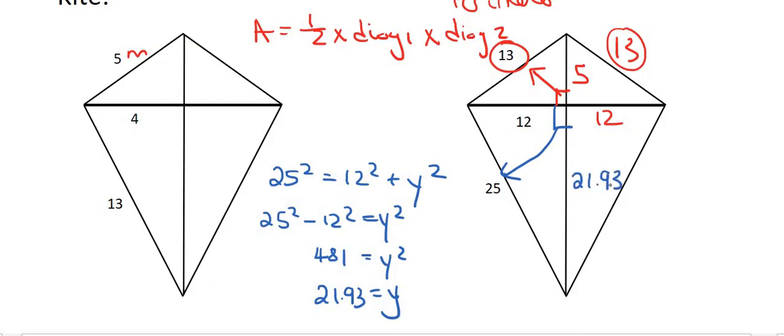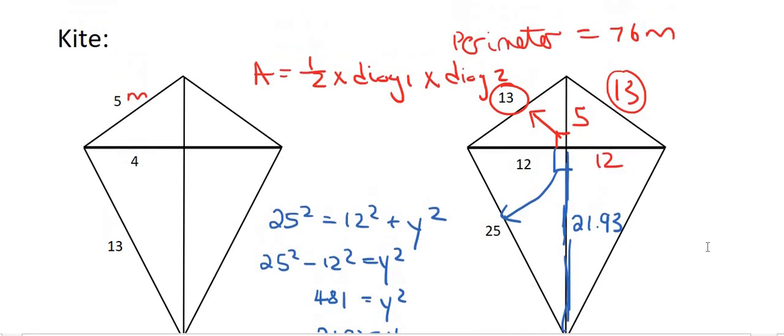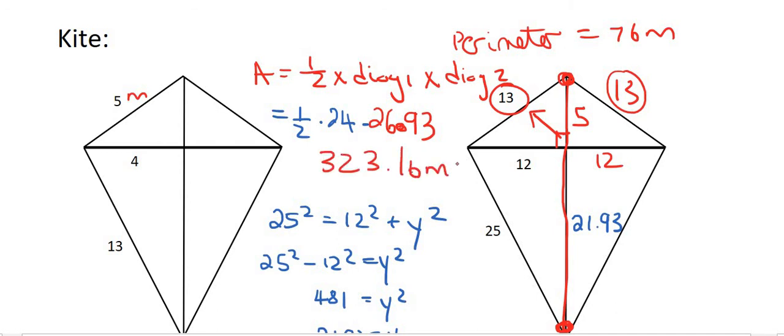Now we can find the area. Oh, that 21.93 is for this part going down here. So now we can find the area of our kite because we know that it's a half. So I'm going to say a half. Diagonal 1 is going to be 24 because I added 12 and 12. And then for diagonal 2, I'm going to add the 5 and I'm going to add the 21.93. Why? Because the diagonal starts over here and then goes all the way down, all the way down, all the way down to the bottom over here. And so that will be 5 plus 21.93, and that's going to be 26.93. And then you can just go type all of this on your calculator and you should get an answer of 323.16 meters squared.